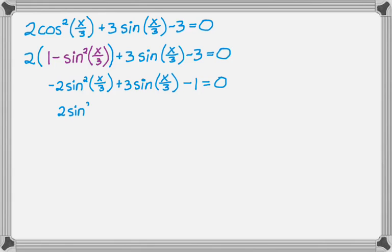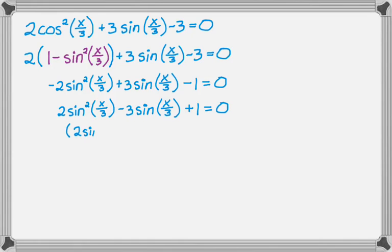Multiply by a negative because I do not like factoring with a negative leading coefficient. Now this actually factors, so I'm going to factor it. If it doesn't factor, you can actually use the quadratic formula. If you use the quadratic formula, you always want to make sure that the value you get is in the range of sine.